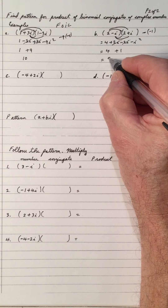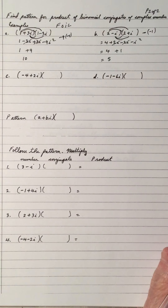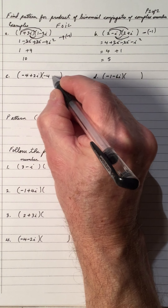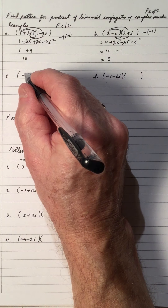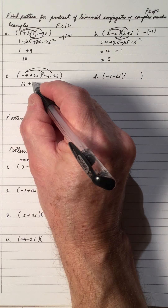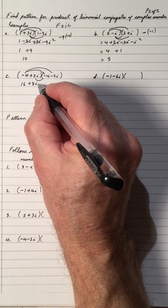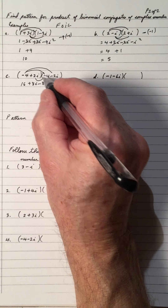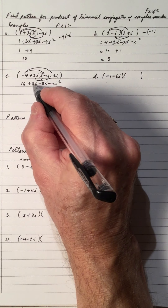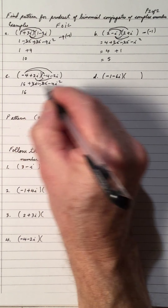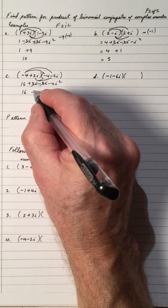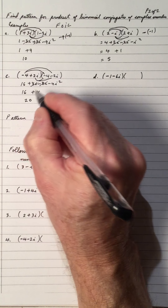The conjugate of negative 4 plus 2i is negative 4 minus 2i. Multiplying by FOIL: first is 16, outside is positive 8i, inside is negative 8i, and last is negative 4i squared. The middle terms cancel out, and negative 4 times i squared — i squared is negative 1 — gives plus 4, so the result is 20.